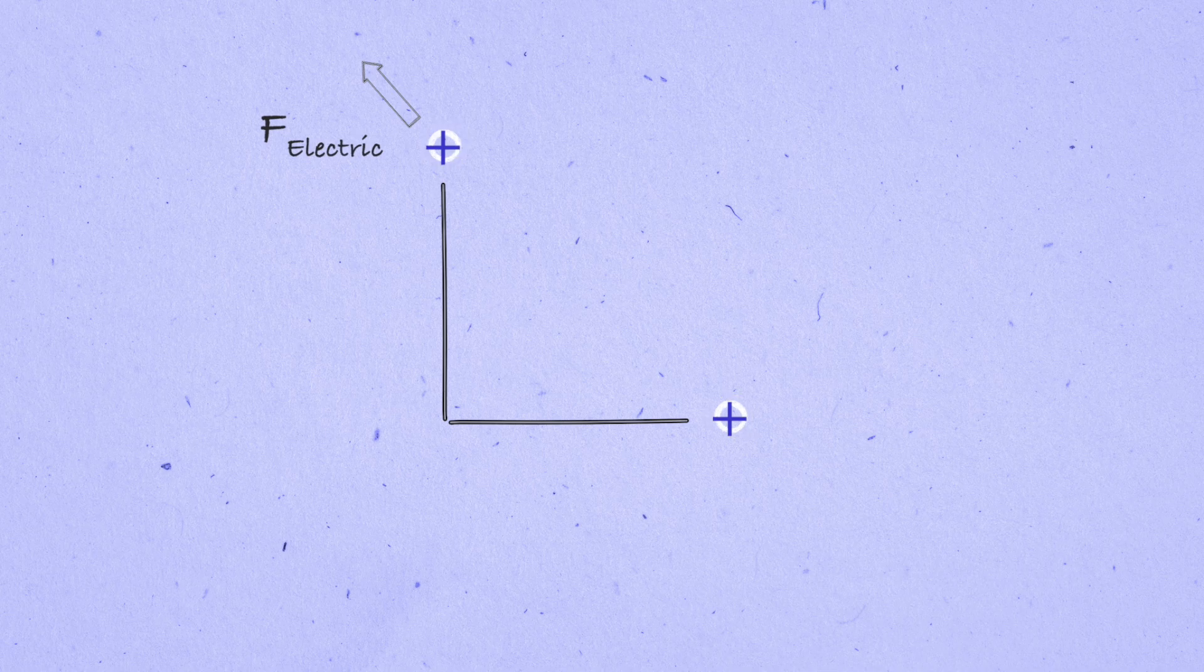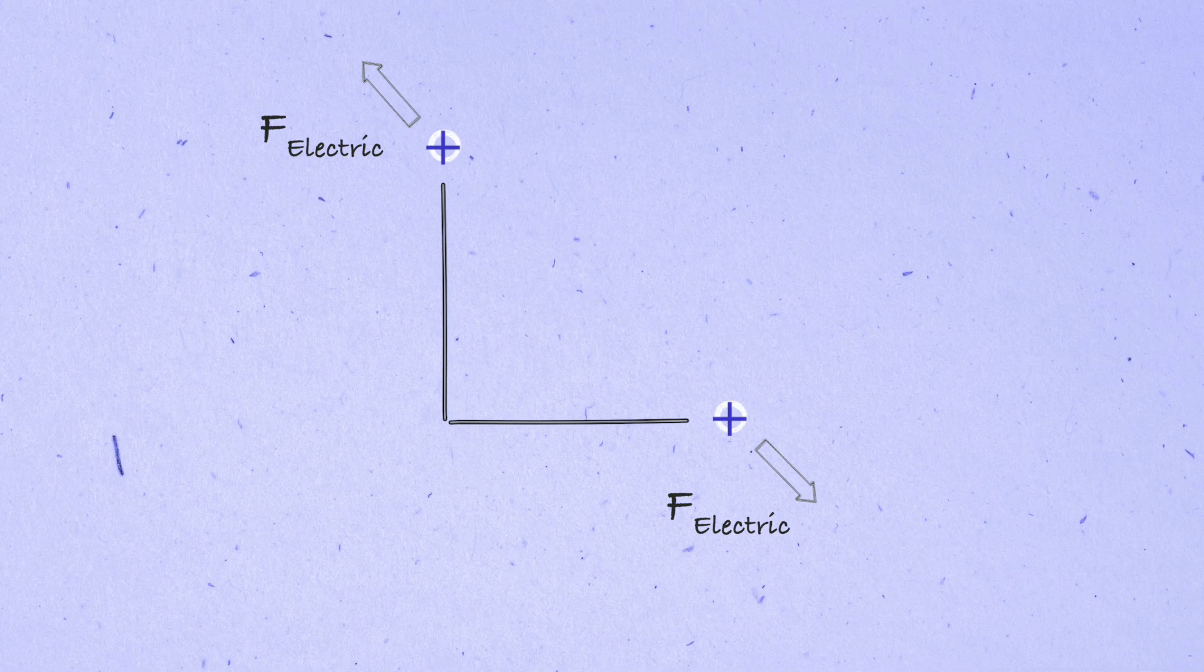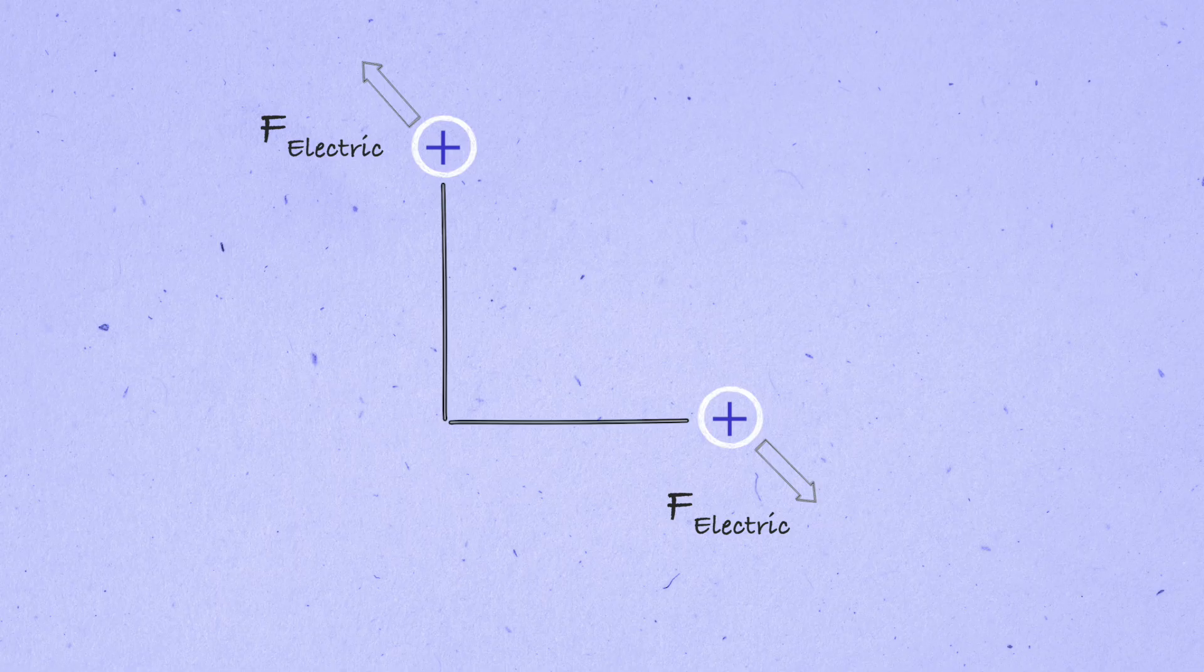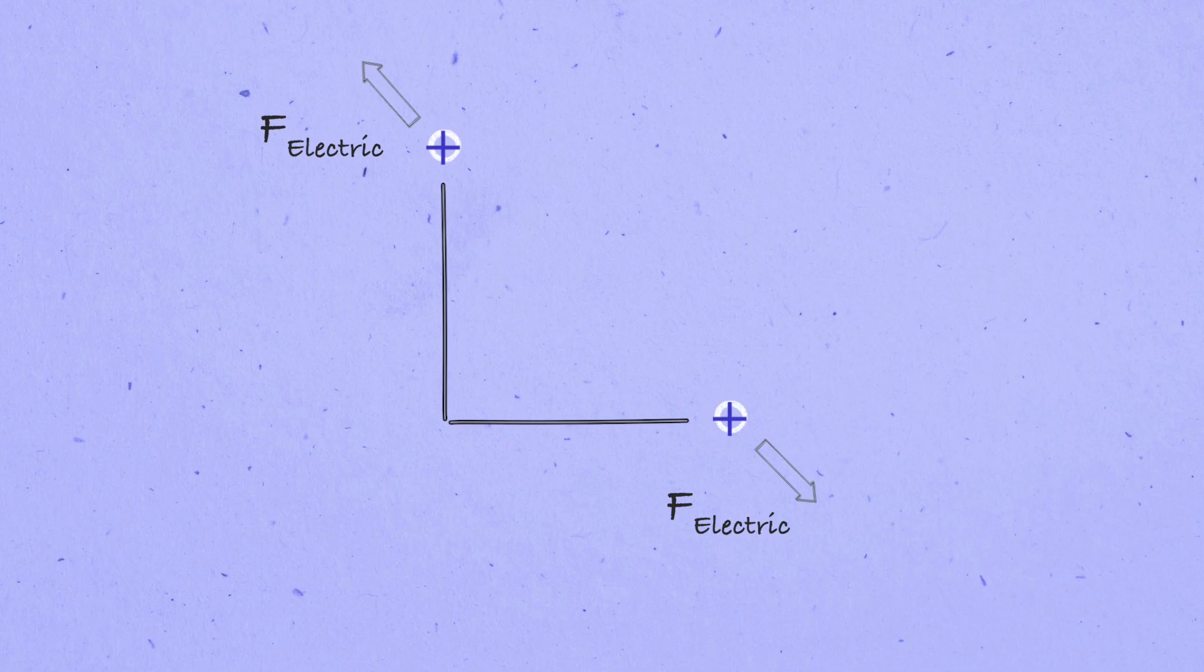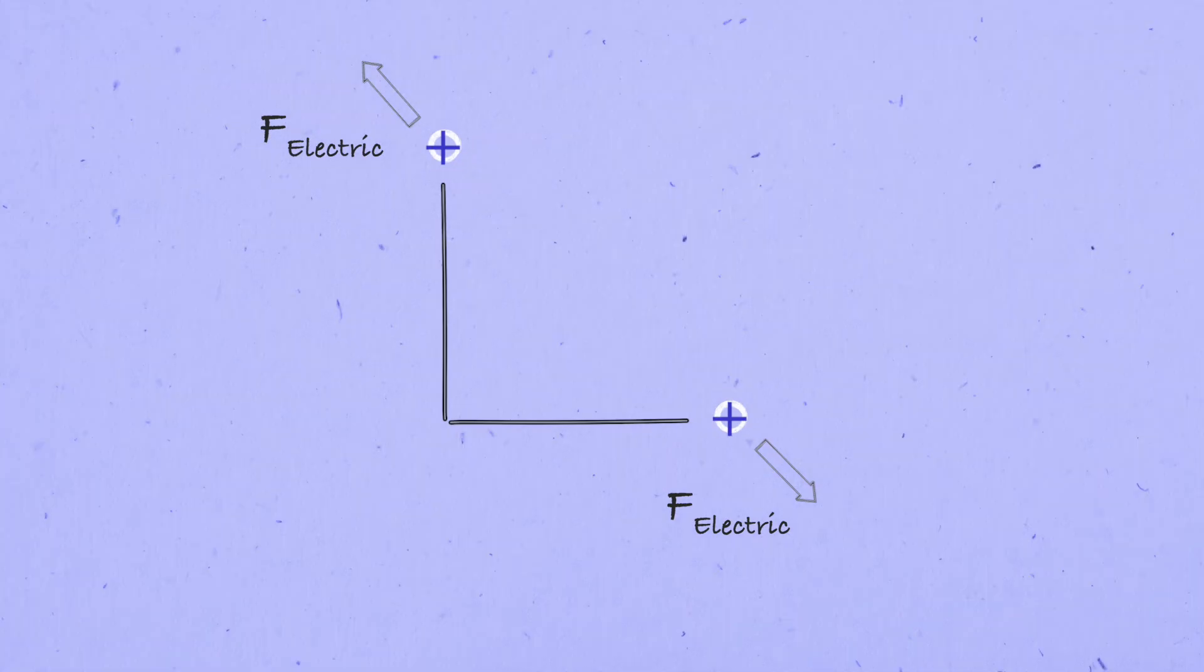Say we have two positive charges moving toward each other at a right angle, one heading down the y-axis and the other heading to the left along the x-axis. Since the charges are the same sign, there will be a repulsive electric force between the two of them. That force isn't precisely given by Coulomb's law, since that's specific to stationary charges, whereas these are moving. But the electric forces are still going to be equal but opposite to each other.